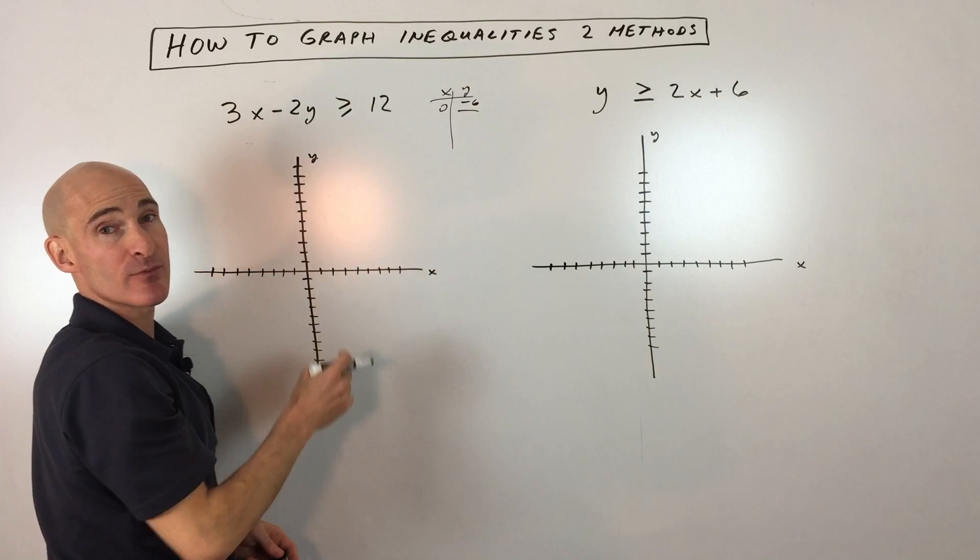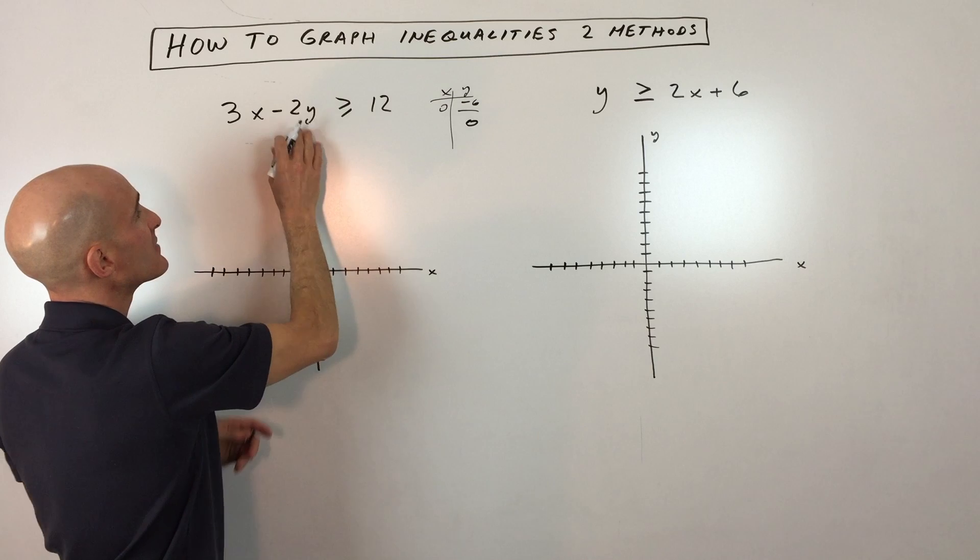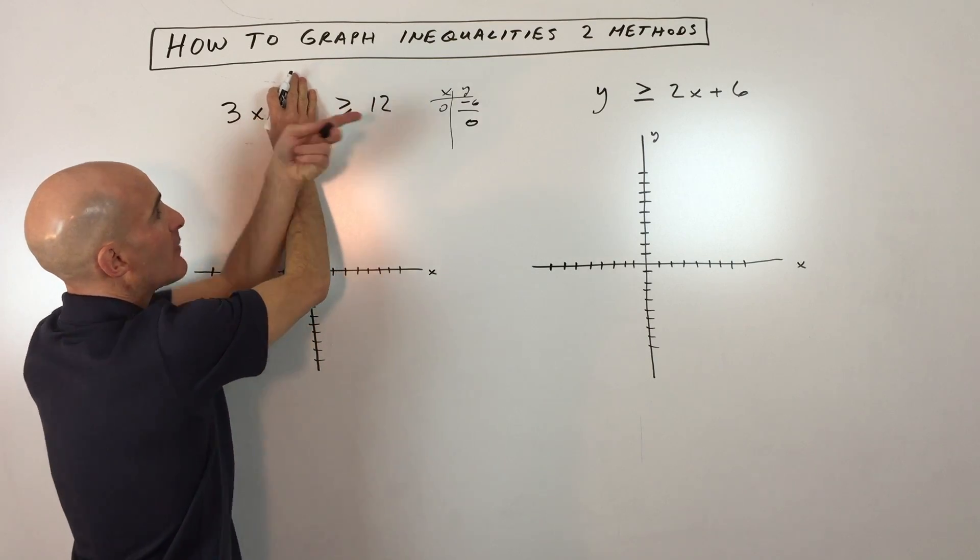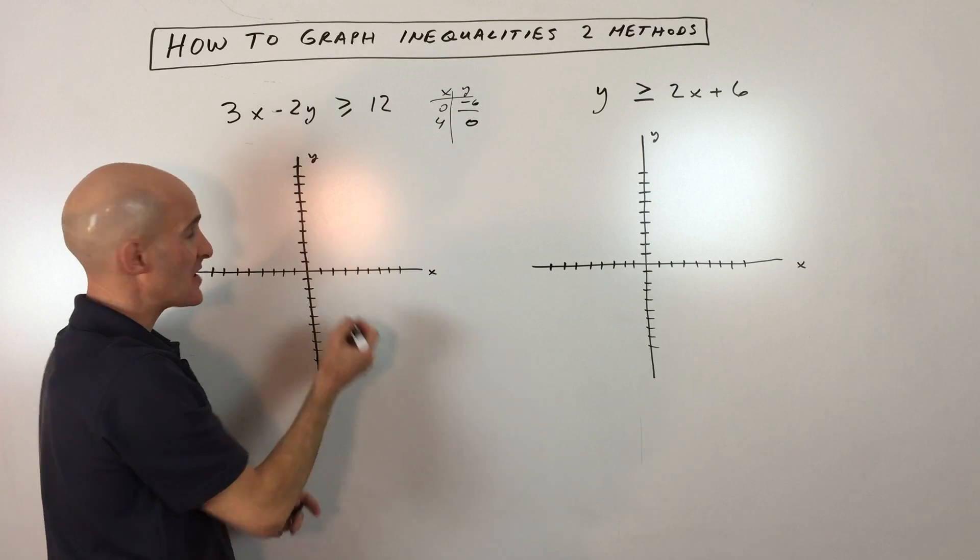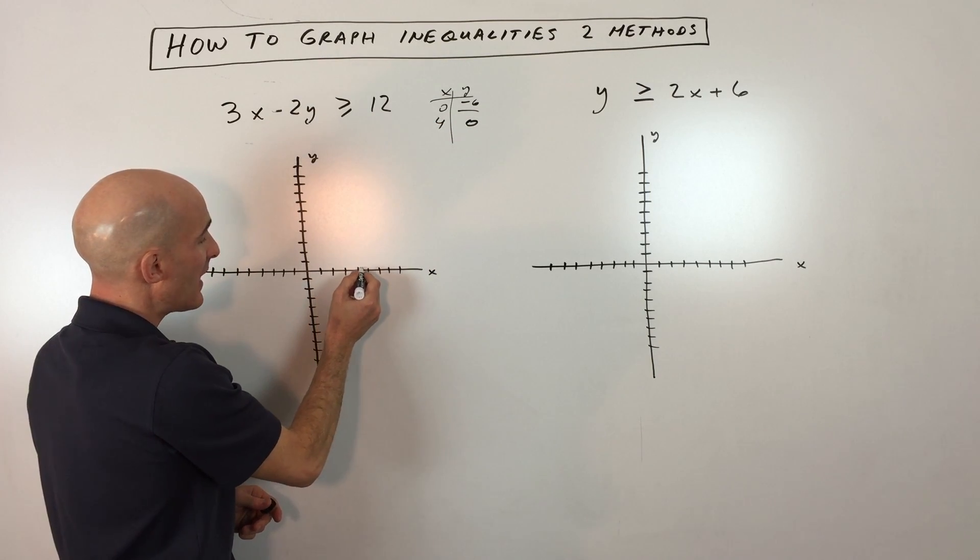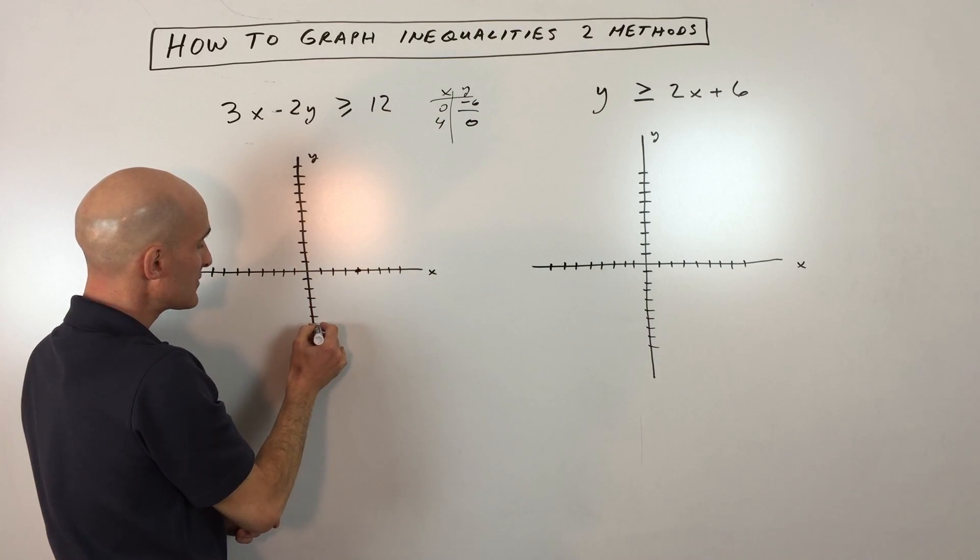Now we're just treating this like a line temporarily. I'm just treating this like an equal sign. Now if we set y to 0, okay, 0 times anything is 0, so I'm going to cover that up. And if we divide both sides by 3, you can see that x is 4. So that's the x-intercept. So if we plot those points, x-intercept is here at 4. The y-intercept is down here at negative 6.